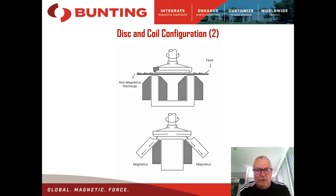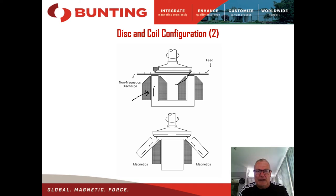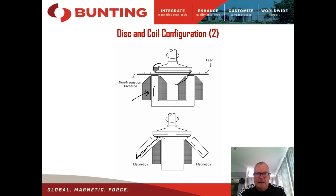Looking at the disk and separation in more detail: these are the coils and the magnetic circuit, with the iron circuit going around here. There's the belt and the disk with the separating zones. Material is fed in, separated out at the front and back. In side view, you can see how the discharge works — particles are lifted off, moved out, and removed via the wiper plates. In the outer region, the magnetic field begins to drop off, so particles automatically drop off as well. It's a completely self-cleaning unit.